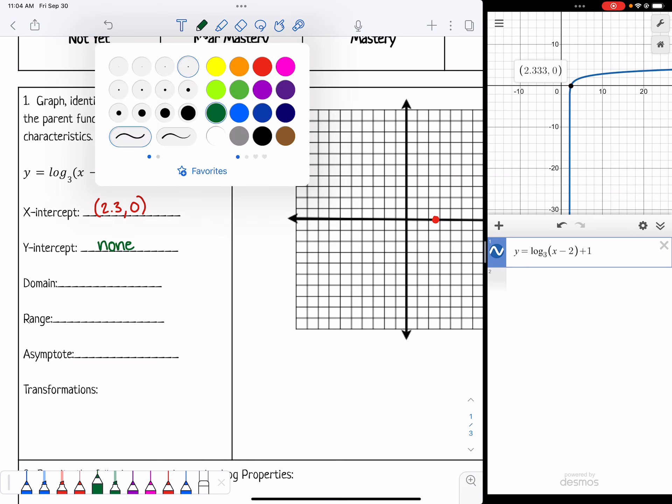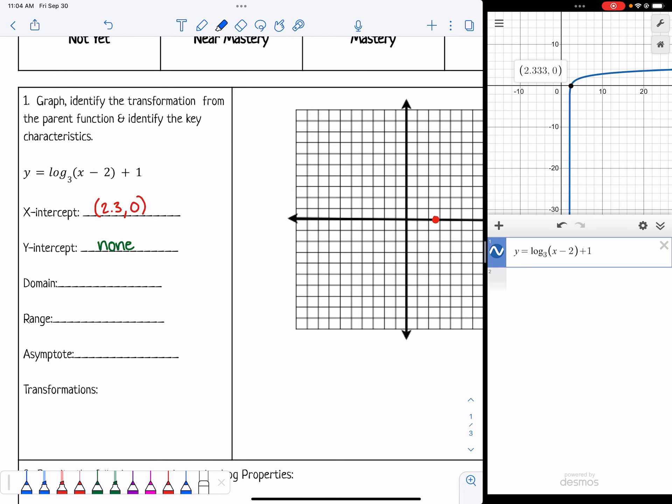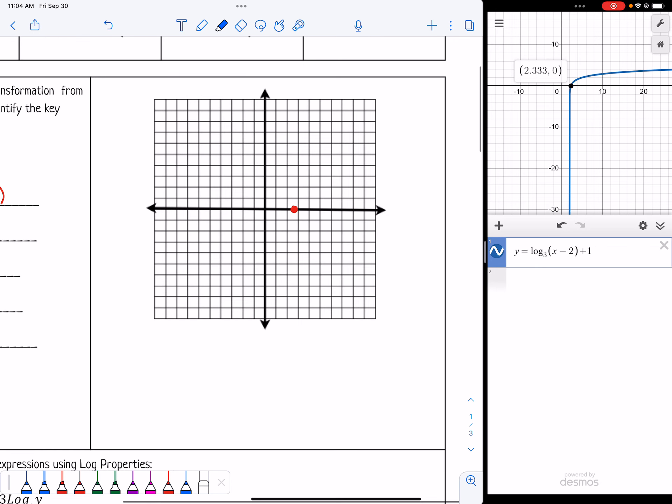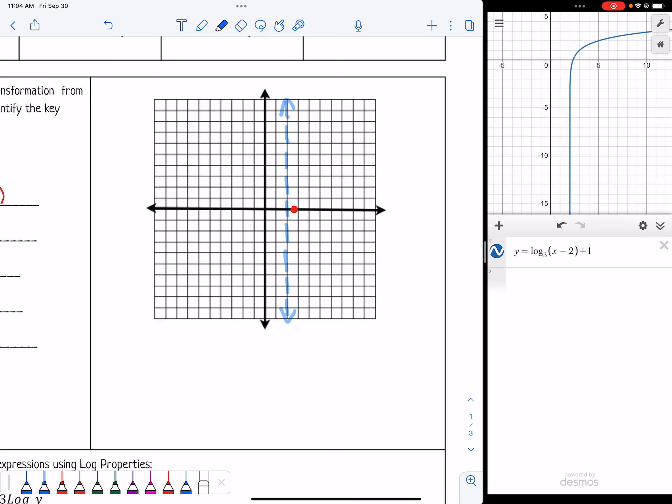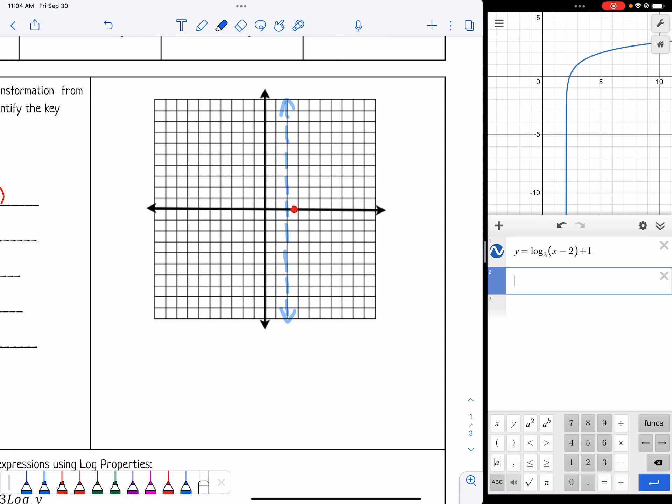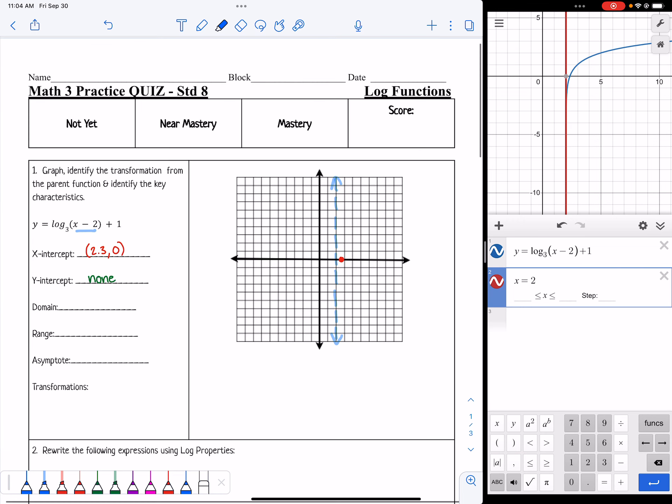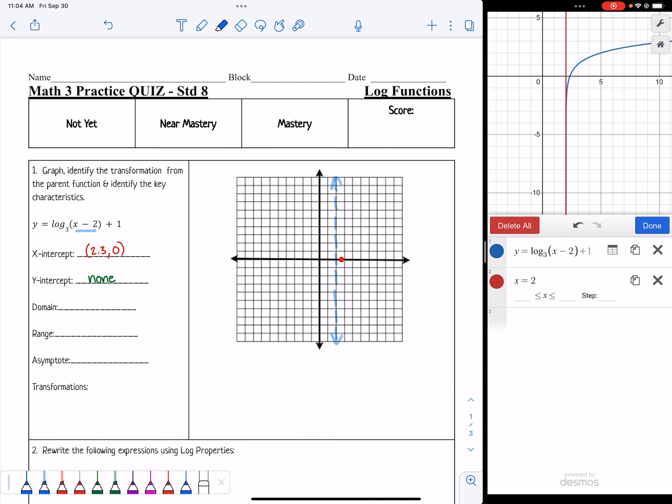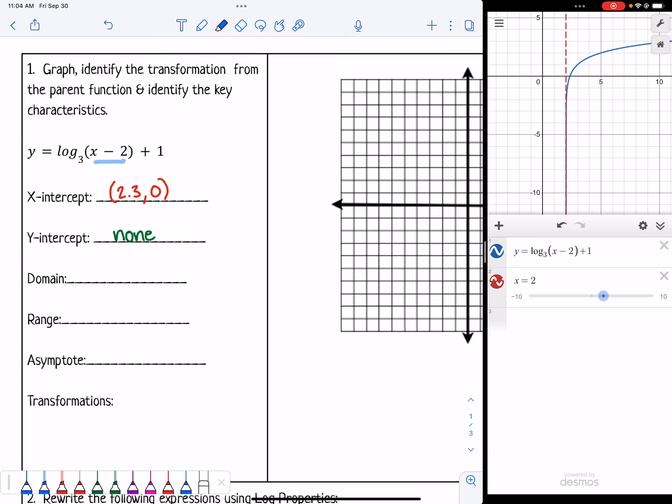What I can see is it looks like the shift to the right 2 has caused the vertical asymptote to shift from 0 over to 2. I can see that on my graph as well. Notice if I type in x equals 2, it'll line right up with my graph. That shows me that is the asymptote. I'm going to make that a dashed line to make it look a little nicer.